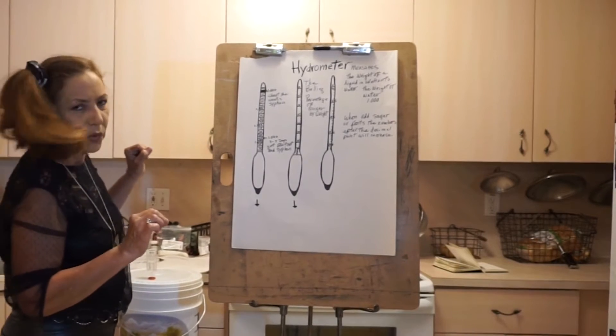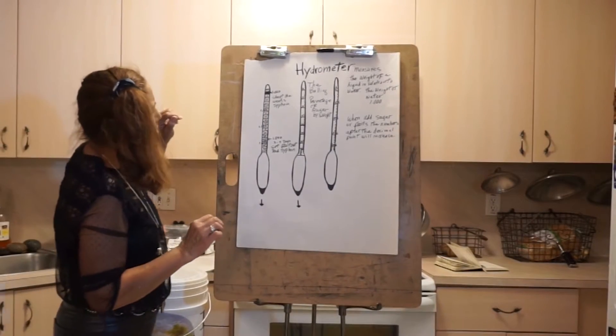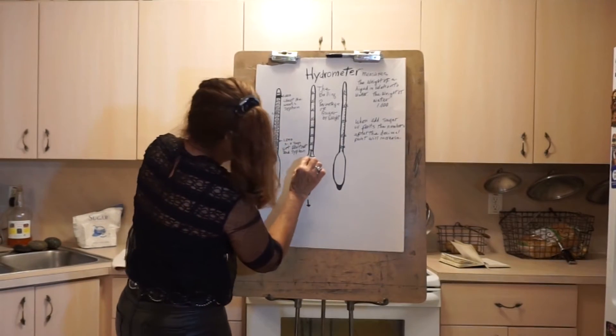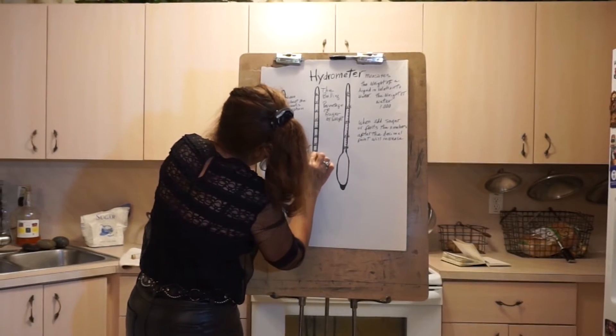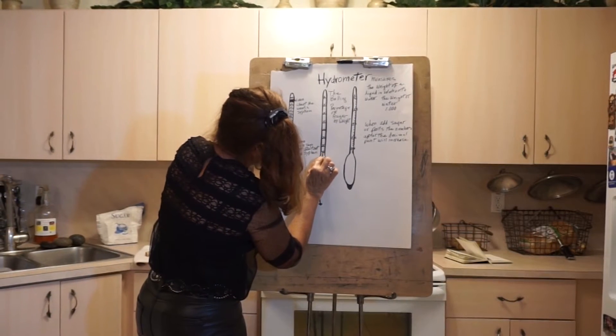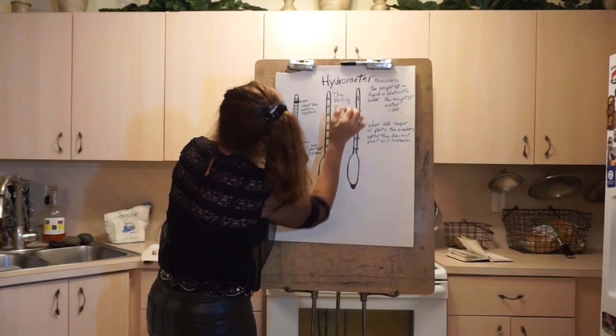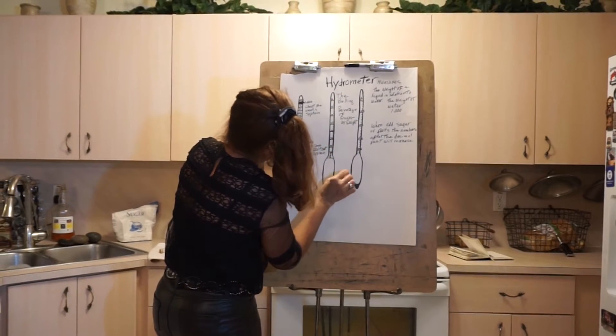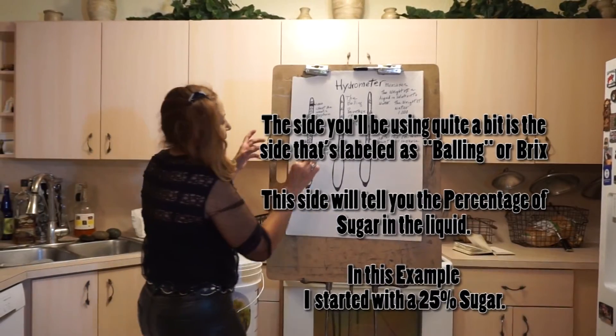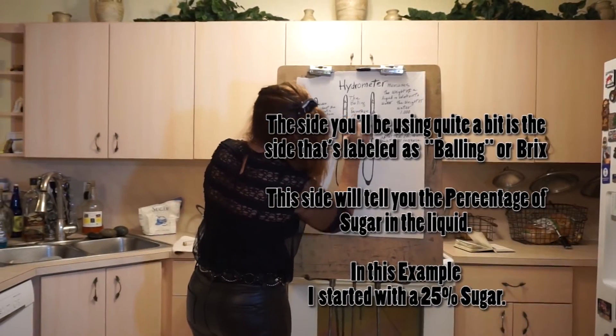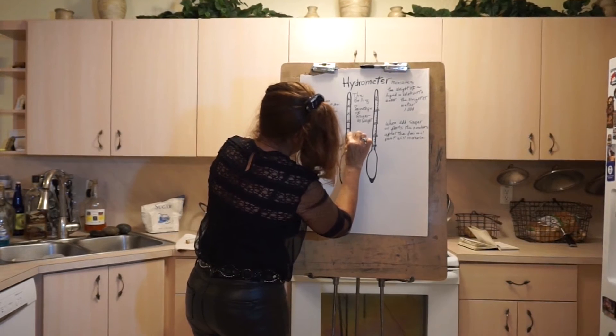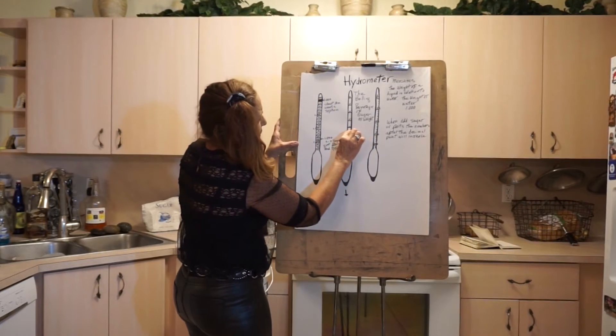So the first measurement you're going to do is on the balling side of the hydrometer. On the balling part you're going to see numbers from 0 to 35. You're going to get a little bit of liquid and measure the sugar level. This one is at 25% sugar.